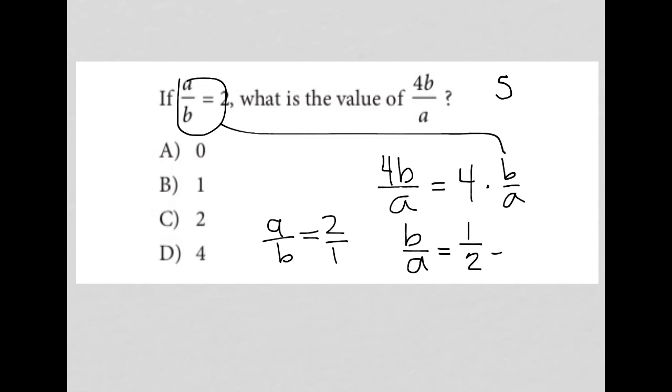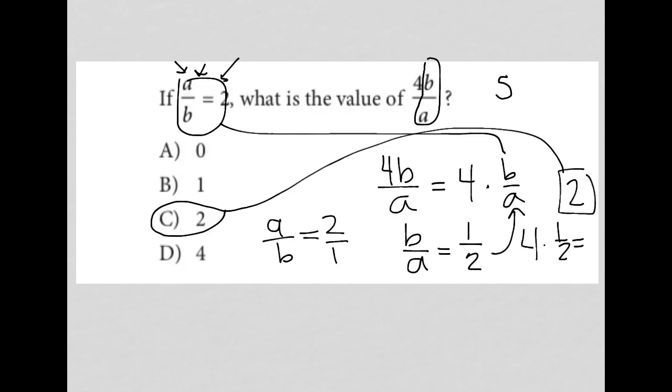And if I can put that in here, then 4 times 1 half or 4 times 1 over 2 is equal to 2. So the answer to this question is choice C based upon utilizing the information that was provided, the A over B, finding the reciprocal of it so we can see how that A over B relates to B over A.